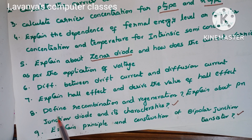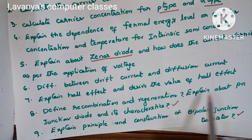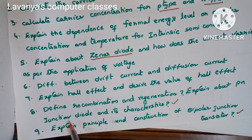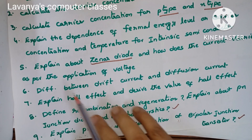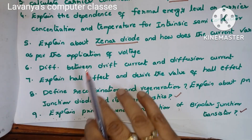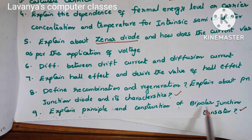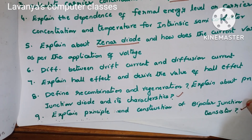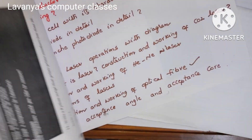Seventh question is explain Hall effect and derive the expression for the Hall coefficient. Eighth question is define recombination and generation. Ninth question is explain about the PN junction diode and its characteristics — very important question. And explain the principle and construction of a bipolar junction transistor, which is also an important question.